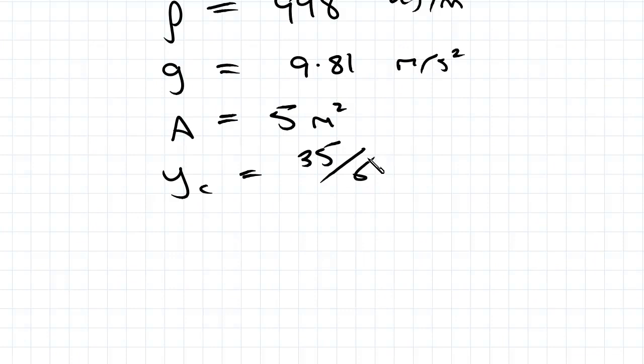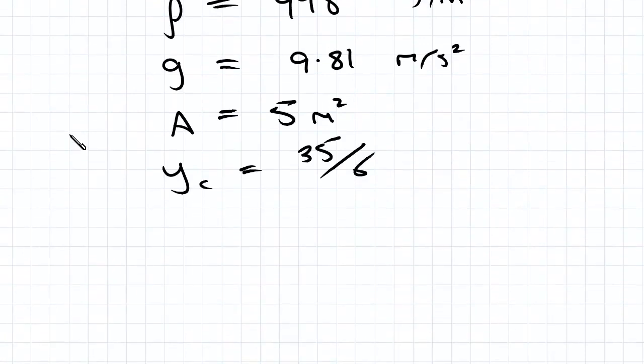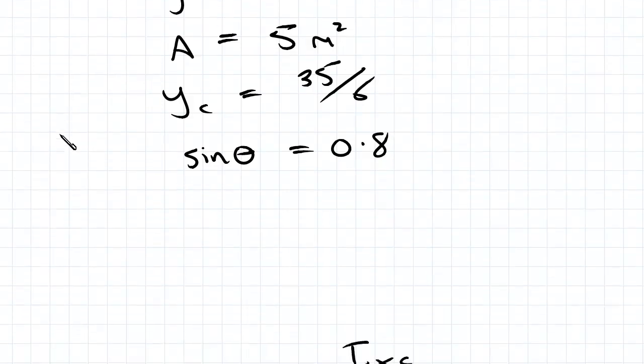So we've got all our terms. We know theta we just found to be inverse tan 4 on 3, so sine of inverse tan 4 on 3 equals 0.8. So we're putting all of that into our formula for FR.